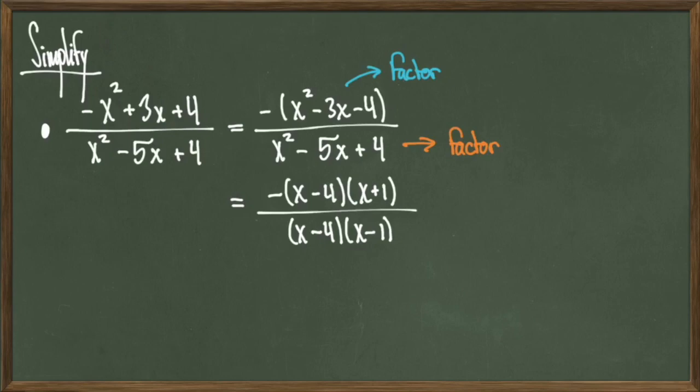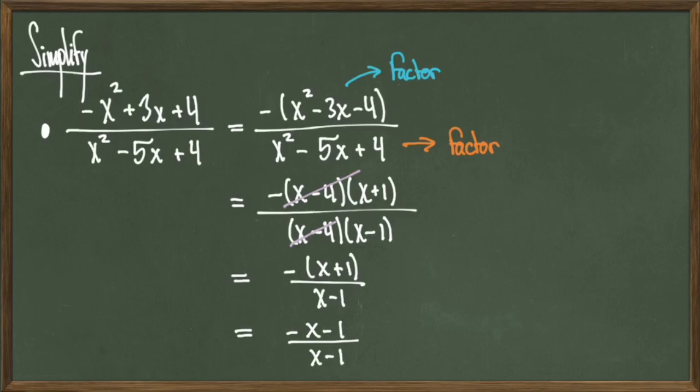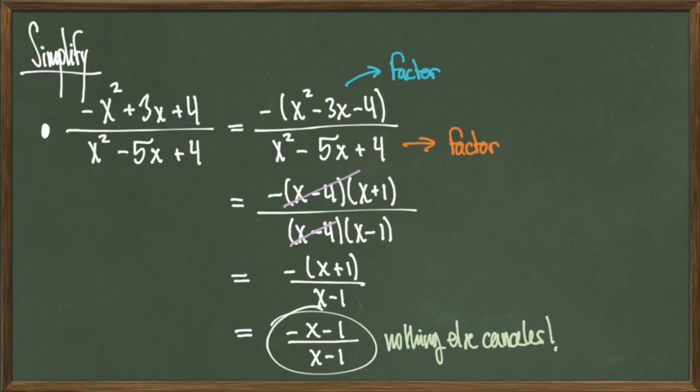I can then notice that I have a common term of x minus 4, so I'll cancel those terms. I'll distribute the negative back in, and I get a final answer of negative x plus 1 over x minus 1.